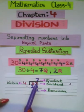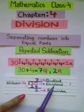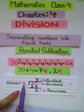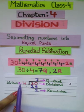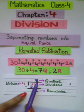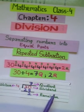And the quotient is 7. So here the number being divided is called the dividend. The number by which the dividend is divided is called the divisor. The result obtained is called the quotient. And the number which is left over after finding the quotient is called the remainder.